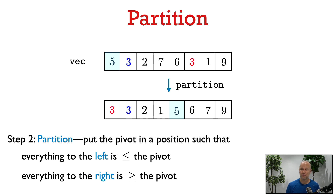Since we are not aiming for a stable algorithm, the partition step does not need to preserve order among elements with equal values. In the picture, the blue three started to the left of the red three, but after the partition the blue three is on the right of the red three — and that's fine because we're not going for a stable sorting algorithm.